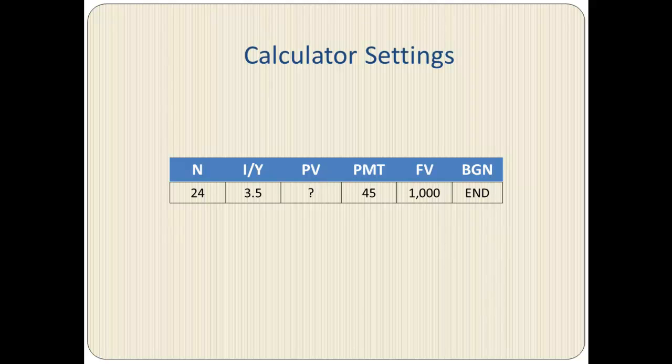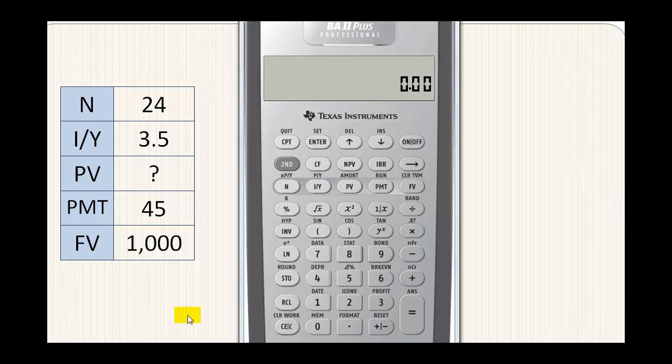So let's take a look and see how we are going to enter the information into the calculator and calculate the present value. First, we clear the TVM worksheet. We enter N equals 24.